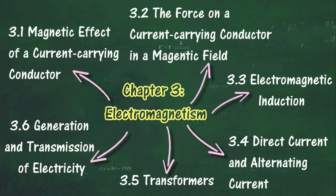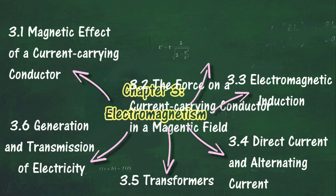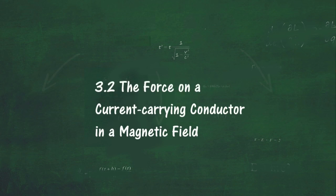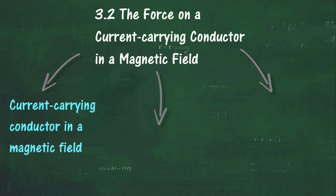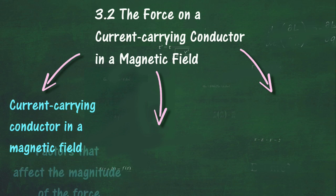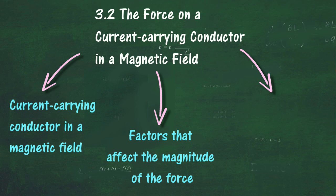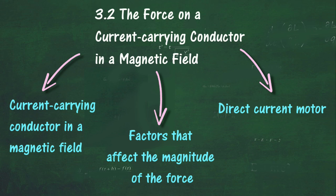In section 3.2, we will learn about the force on a current-carrying conductor in a magnetic field. At the end of this section, you should be able to: describe what happens to a current-carrying conductor in a magnetic field, draw the pattern of a combined magnetic field due to a current-carrying conductor in a magnetic field, and describe how a current-carrying conductor in a magnetic field experiences a force, explain the factors that affect the magnitude of a force on a current-carrying conductor in a magnetic field, describe how a current-carrying coil in a magnetic field experiences a turning force, describe how a direct current motor works, and state factors that affect the speed of rotation of an electric motor.